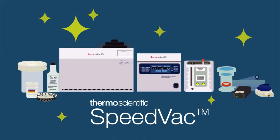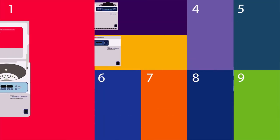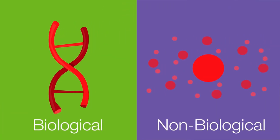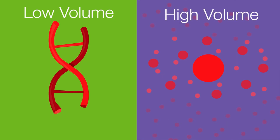SpeedVac is a lean, mean, sample processing machine. Choose from any of the nine different models of vacuum concentrator to suit your needs from biological to non-biological samples, from low to high-volume samples.